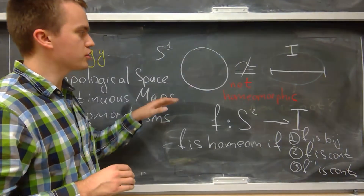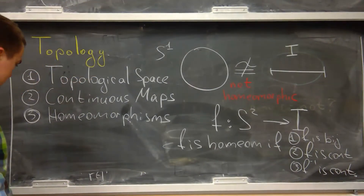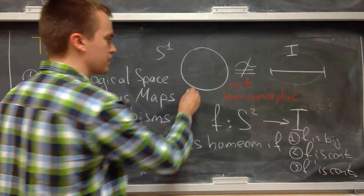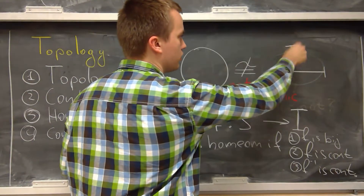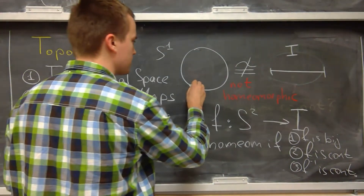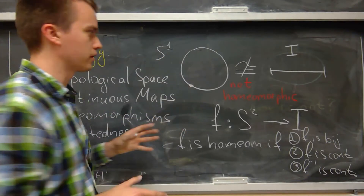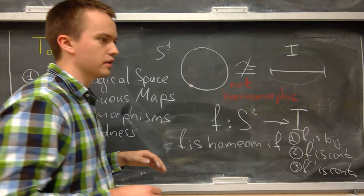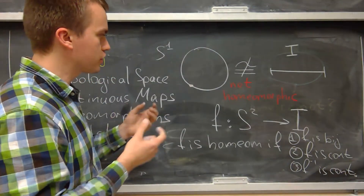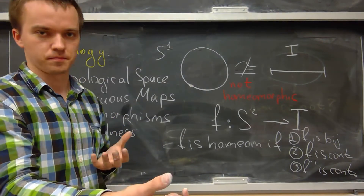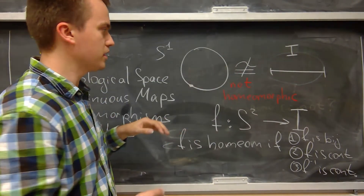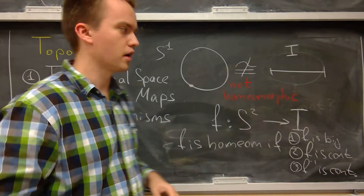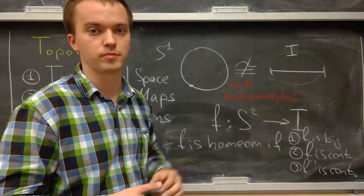The fourth thing we study is connectedness. The circle and the unit interval are both connected — they each have only one connected component, because you cannot separate either space into two disconnected parts. An important property of homeomorphisms is that they preserve topological features: if two spaces are homeomorphic and one is connected, the other must also be connected.